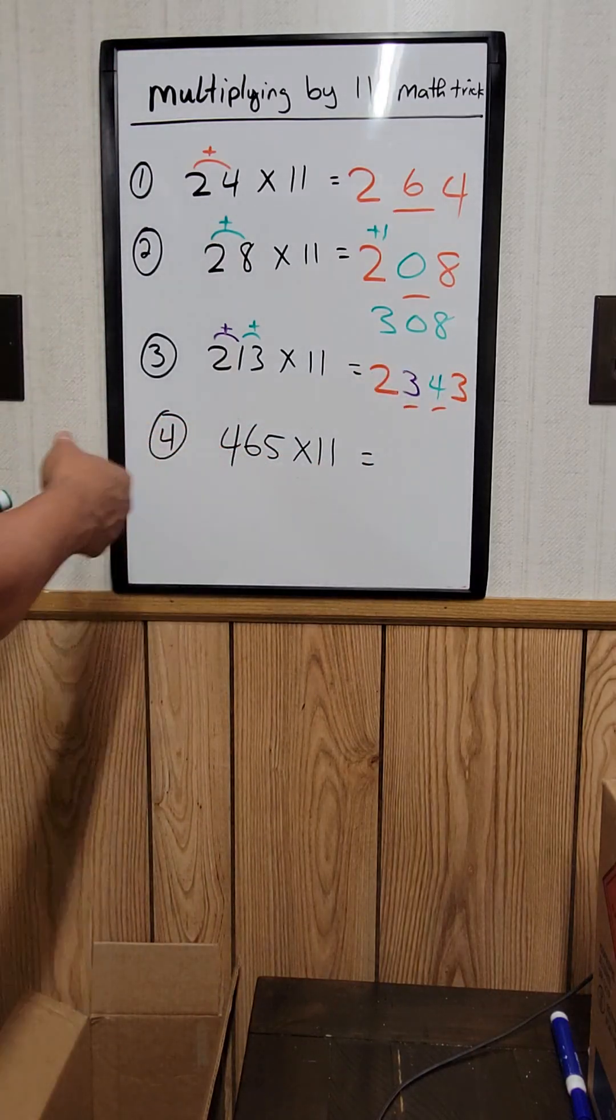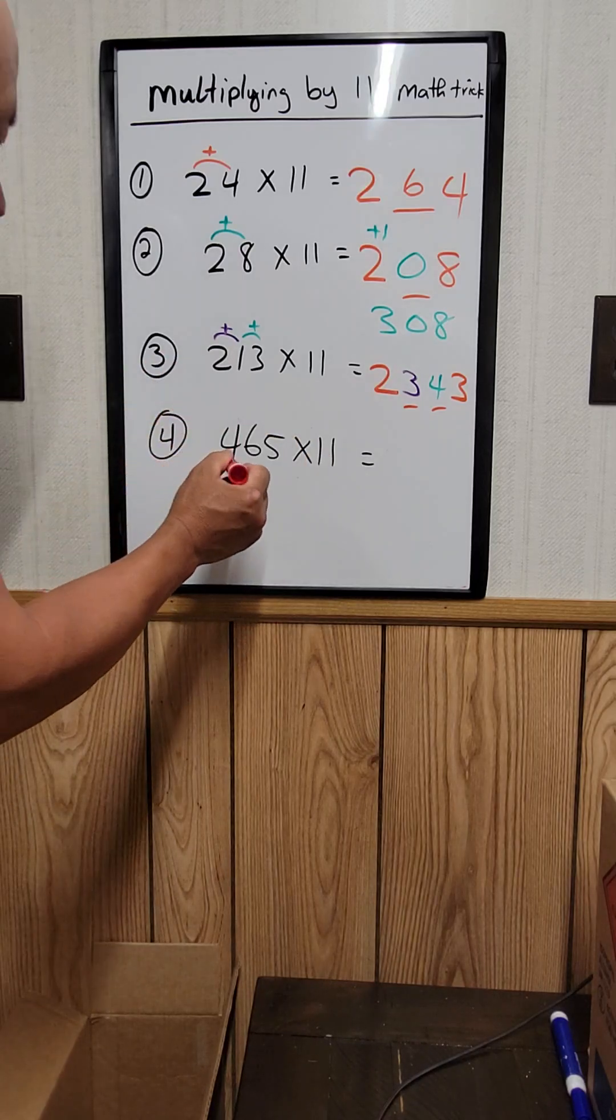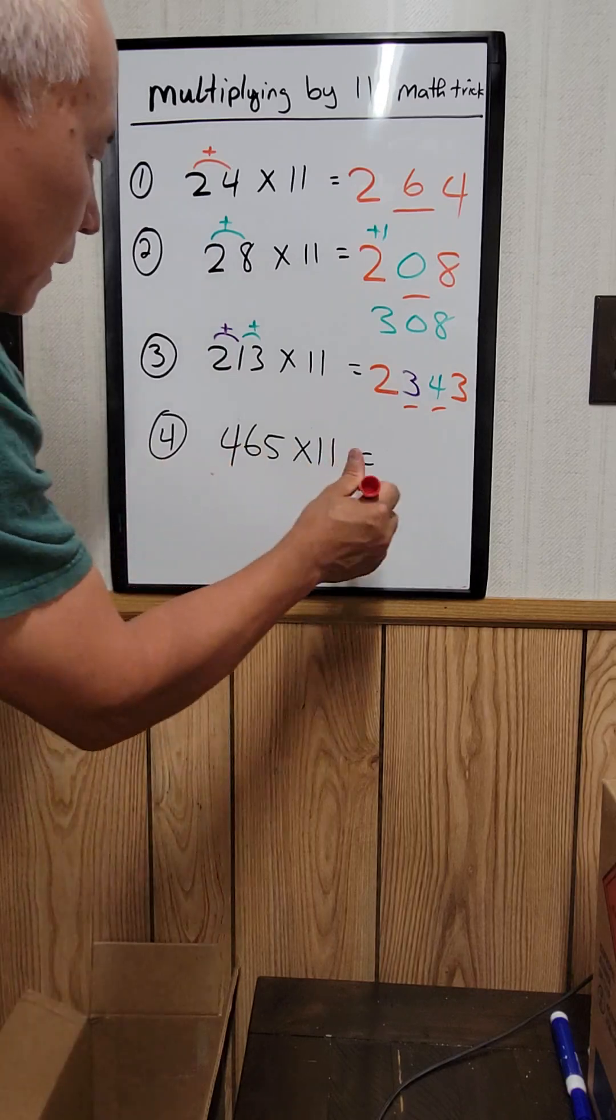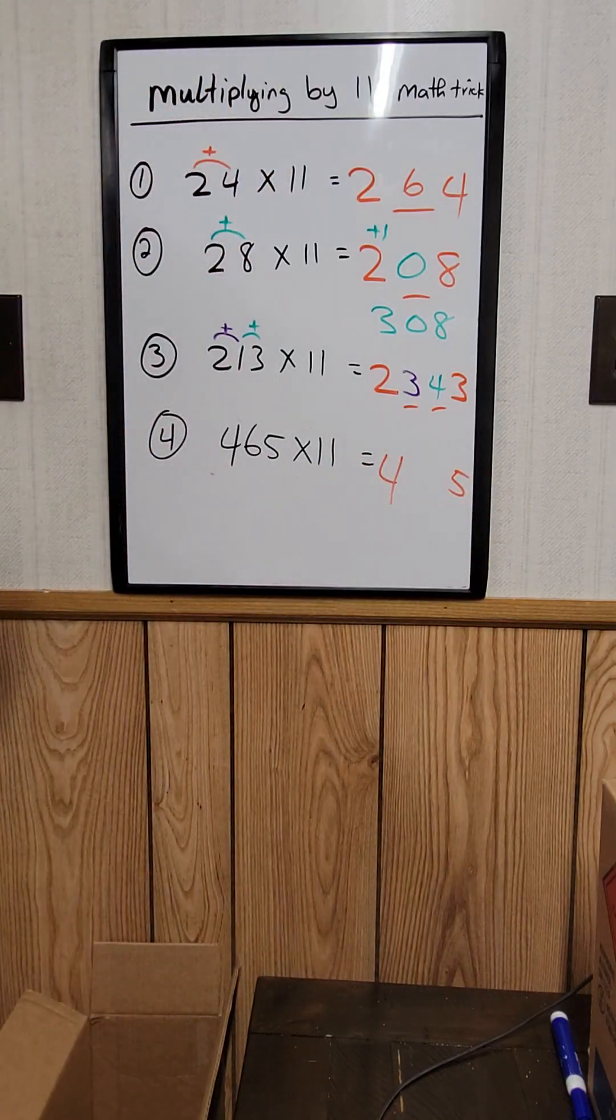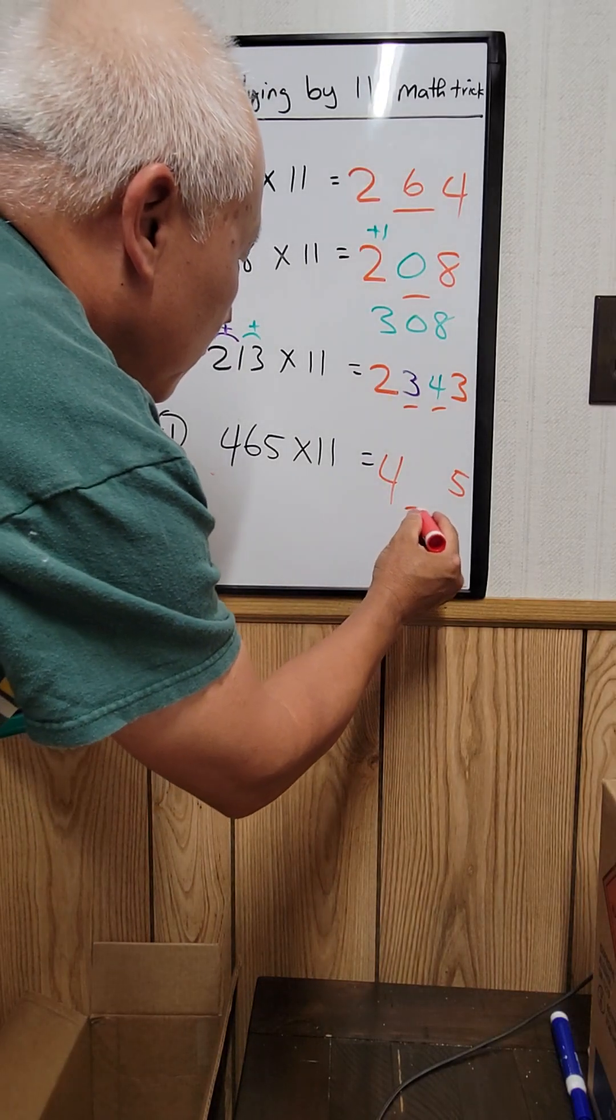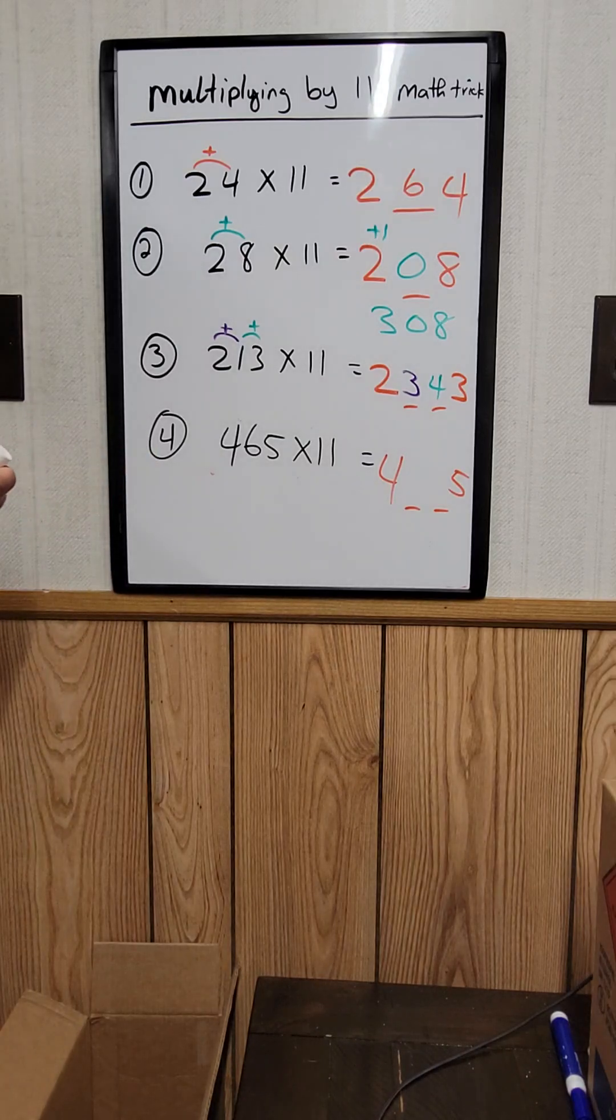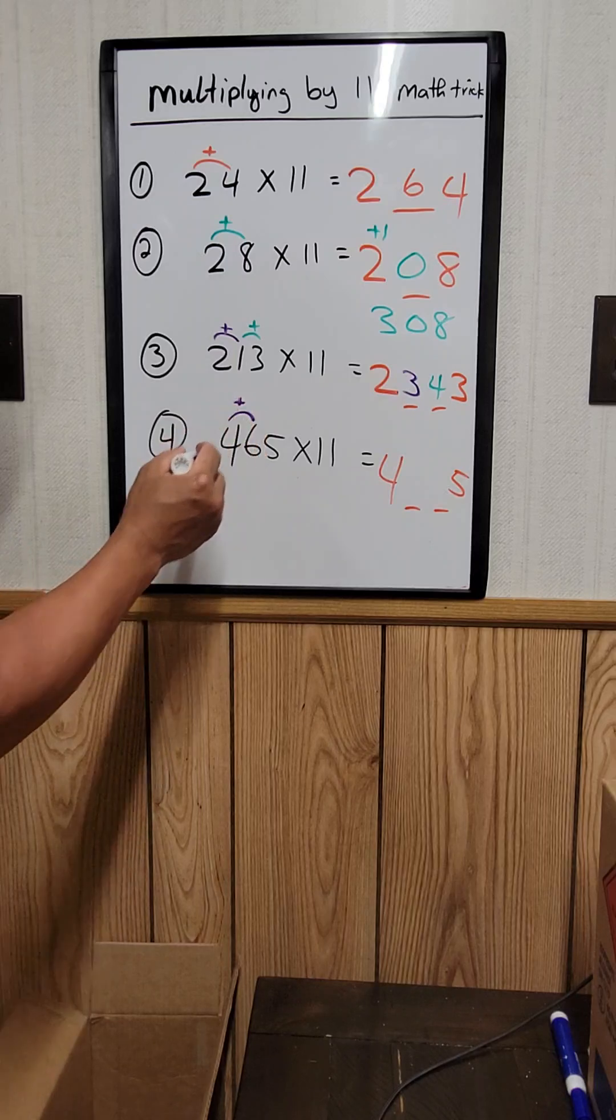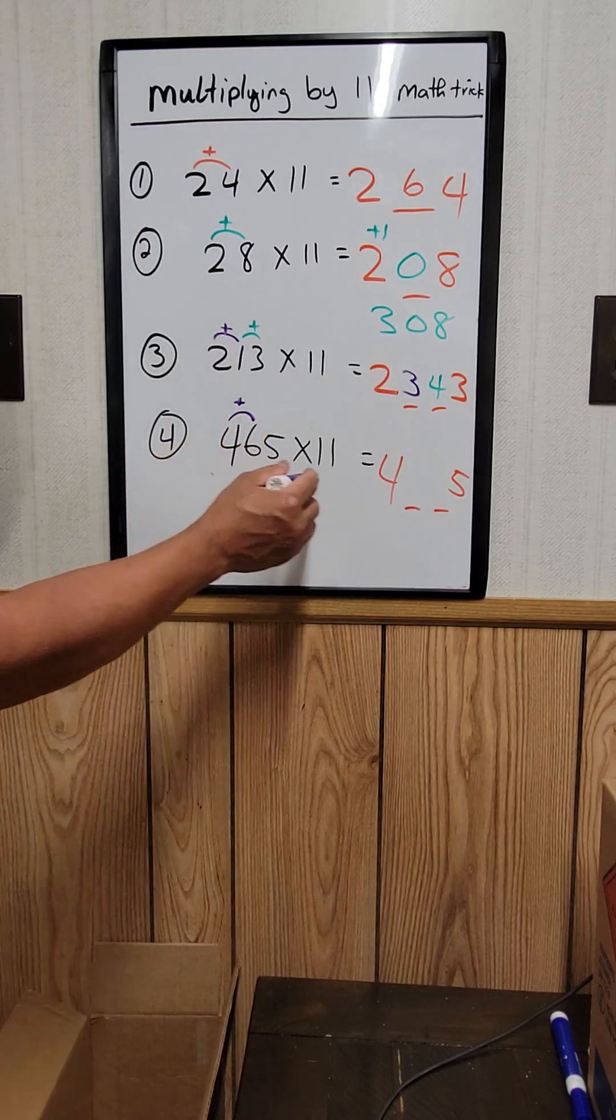How about this one? Okay. 465 times 11. So you need to do it, just write the 4 and the 5 right here. And you have, like I say, you have 2 digits in the middle right there. So you need to do it, just add this 2.